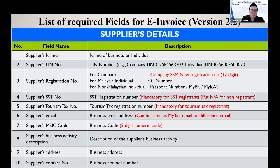Supplier detail means your company details, since your company is supplying products or services to others. You need your company name, TIN number (the company income tax number), and registration number — make sure you use the new 12-digit SSM registration number, not the old six-digit one with an alphabet prefix. For Malaysia individuals, use the IC number; for non-Malaysians, use the passport number.